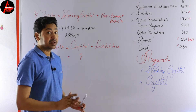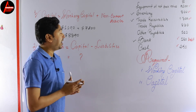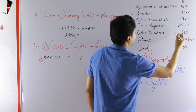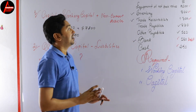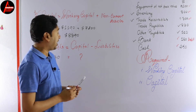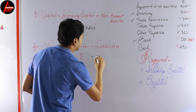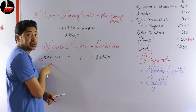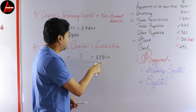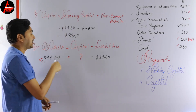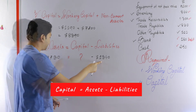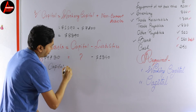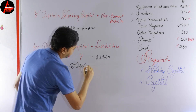Now we calculate total liabilities — current liabilities, non-current liabilities, whatever is a liability, add it. Here we have two liabilities: trade payables at 820 dollars and other payables at 510 dollars. There are no more liabilities in this question, so adding these two gives us 1,340 dollars. Capital equals Assets minus Liabilities.